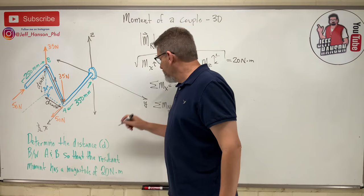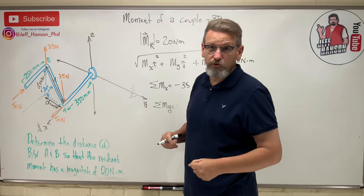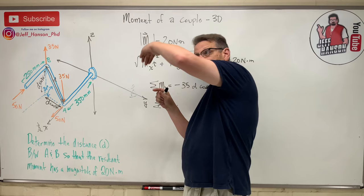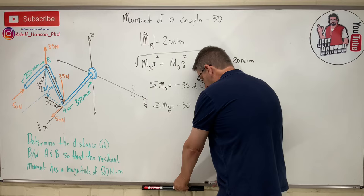So that one's going to be negative. So the y is going to be negative 50 times how far away. Well, from the y-axis, which is in this x-y plane, this thing is going to cross above the y-axis this height here, d sin 30. So times d sin 30.